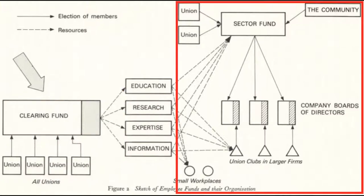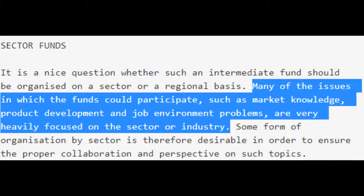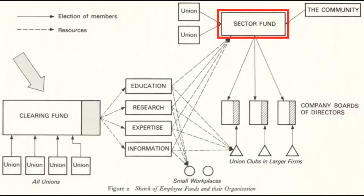During the development of the Meidner Plan, it was understood that it made sense to have intermediate funds that manage the value and dividends of shares at a level above individual workplaces and unions, but below that of the central clearing fund. The main question was whether those intermediate funds would be regional — split up by location — or sector-based, split up by industry. Ultimately, it was decided that the final proposal would recommend mid-level funds split up by sector. The reason was that questions of industrial management would best be left to those who knew specifically about that industry, rather than being managed by largely arbitrary geographic areas.